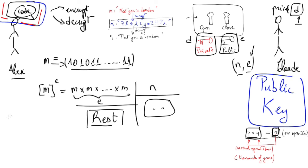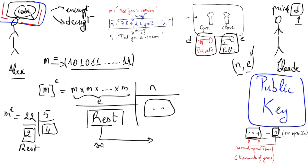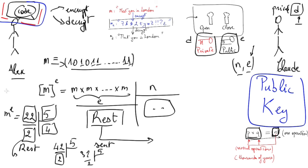From the Euclidean division, Alex obtains the remainder, which we call 'rest' throughout this explanation. For example, if M to the power E equals 22 and N equals 5, we get 4×5=20 with a rest of 2. Only this rest is sent to Claude. If you are given the rest of 2 and N of 5, you can't determine that M^E was 22, because many other numbers divided by 5 also give a remainder of 2 — such as 42, 32, 62, or anything ending in 2 or 7.